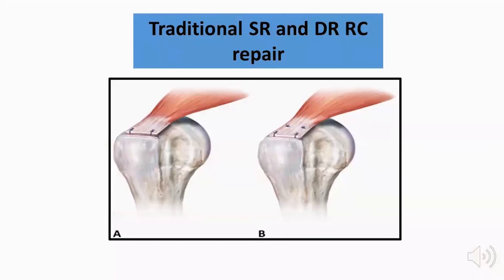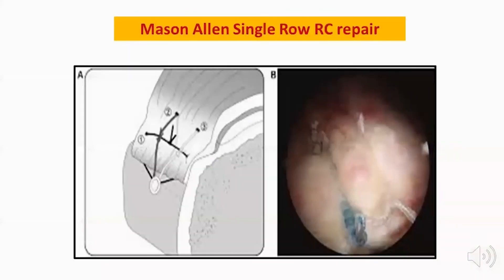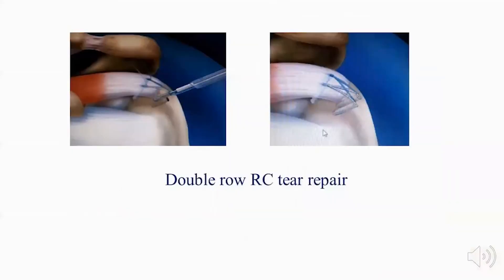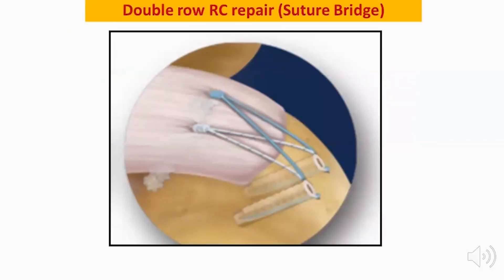Other techniques include the traditional single row repair or a double row repair. A variant of the single row is the Mason-Allen single row rotator cuff repair, which uses a ripstop together with a mattress suture for better fixation of the rotator cuff tendon on the greater tuberosity. Another modality is the double row rotator cuff repair, including the suture bridge technique.